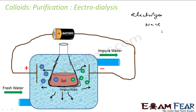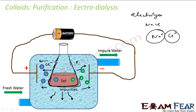Electrolytes such as NaCl carry charge — Na⁺ and Cl⁻ ions. When an electric field is applied, Cl⁻ is attracted toward the positive electrode and Na⁺ toward the negative electrode. Since the membrane is semi-permeable, electrolytes easily pass through it, making the dialysis process much faster. Neutral impurities pass through by gravity.